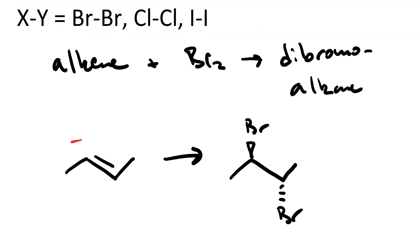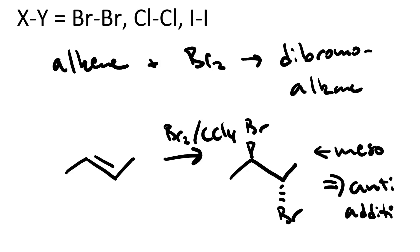Note here that when we take trans-2-butene, shown at the left, and we react it with bromine in CCl4, we get meso-2,3-dibromobutane. This means anti-addition. In other words, one of the bromine atoms added above the plane of the alkene and the other one added below. The one that's on the wedge added above the plane. The one that's on the dash below.